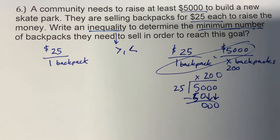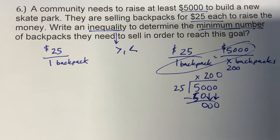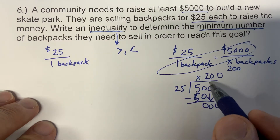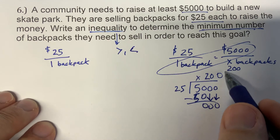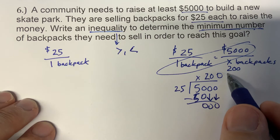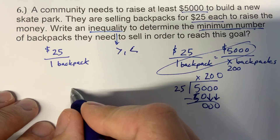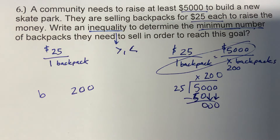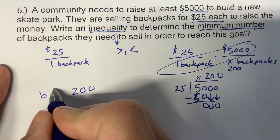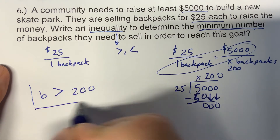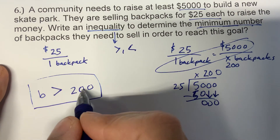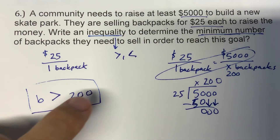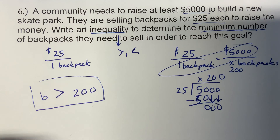Does that mean once we're done selling 200 backpacks, we're done? Well, if you were trying to raise money for a skate park, wouldn't you want to get as much money as you could? So 200 is the minimum, but we could sell more, make more, make it even better. Our inequality is going to be 200 backpacks — do we want more or less than 200? We want more backpacks than 200. The least amount would be 200, but we're hoping we get more. So backpacks should be greater than 200. There's our inequality statement.